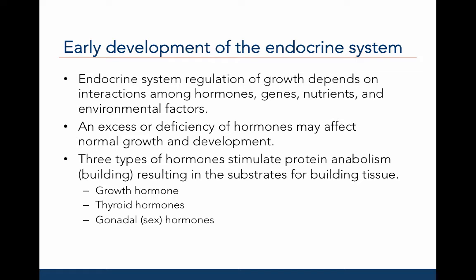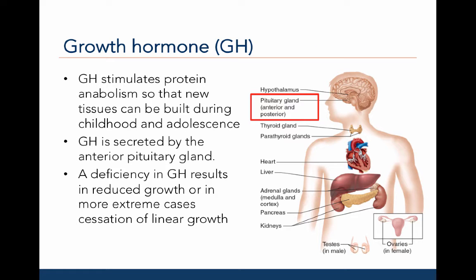We will discuss growth hormone, thyroid hormones, and gonadal or sex hormones. Growth hormone stimulates protein anabolism so that new tissues can be built during childhood and adolescence. Growth hormone is secreted by the anterior pituitary gland, located at the bottom of the hypothalamus at the base of the brain. A deficiency in growth hormone results in reduced growth, or in extreme cases, a cessation of linear growth.